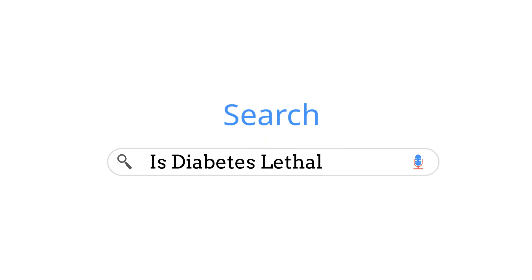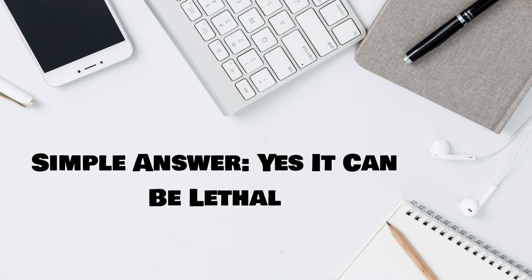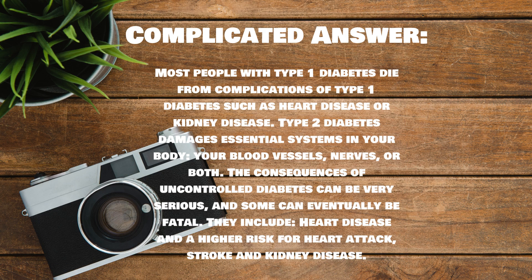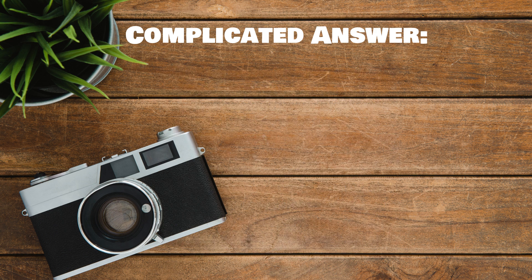Can type 1 diabetes be lethal? The simple answer is yes, diabetes can be lethal. However, the complicated answer is that most people with type 1 diabetes die from complications such as heart disease or kidney disease. Type 2 diabetes damages essential systems in your body — your blood vessels, nerves, or both. The consequences of uncontrolled diabetes can be very serious and some can eventually be fatal, including heart disease, higher risk for heart attack, stroke, and kidney disease.